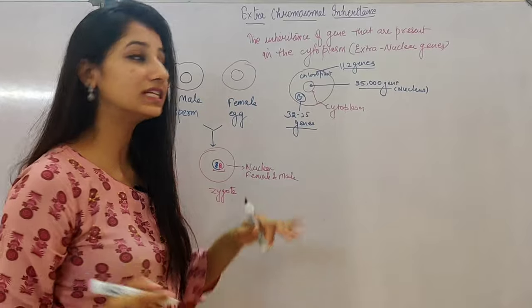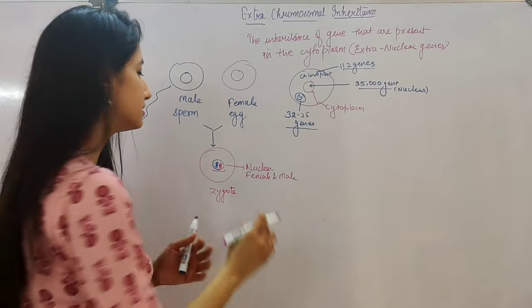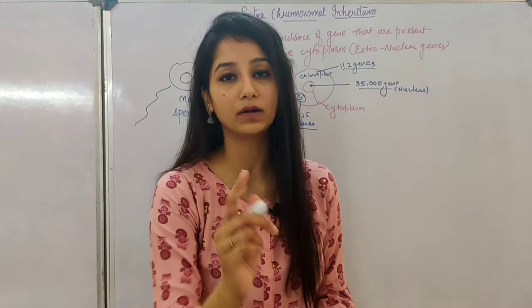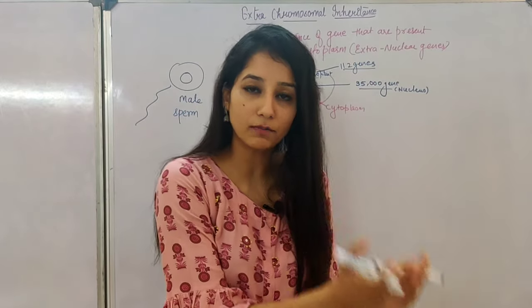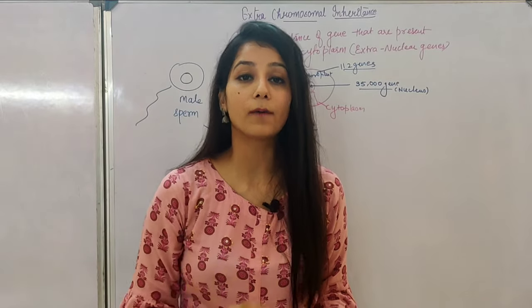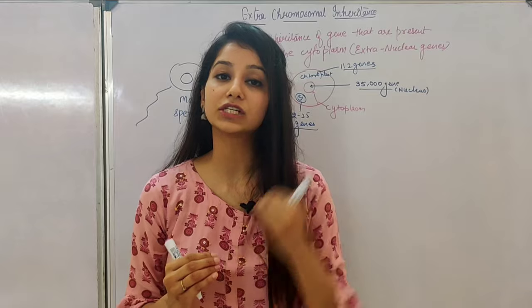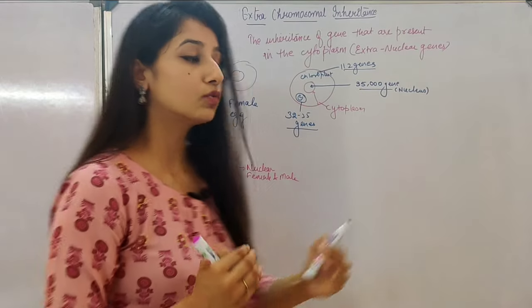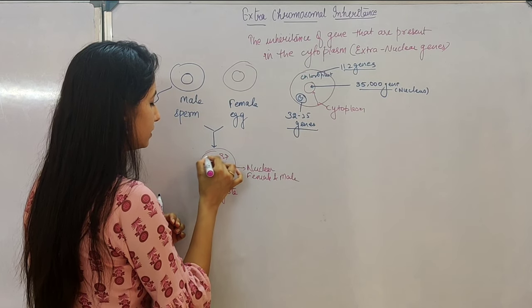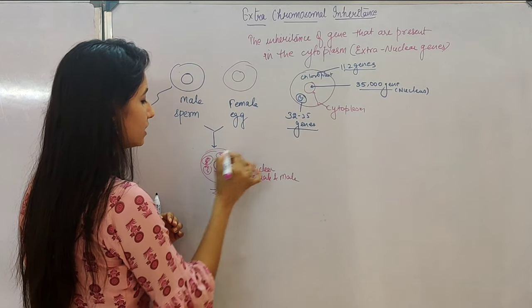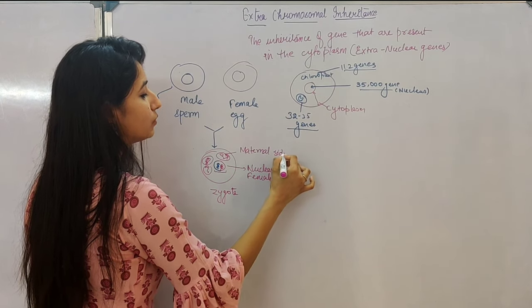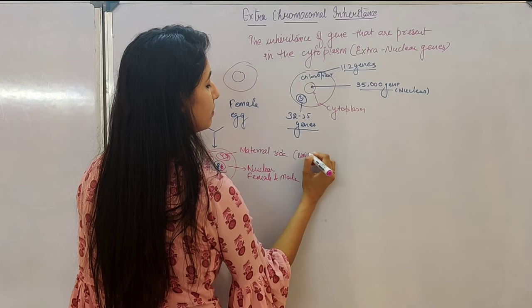But if we see cytoplasmic inheritance, then the genes are present from only one parent — either from the maternal side or from the paternal side. Generally it is from the maternal side, or we can say generally it is from the egg. So in this zygote, the genes are generally present in the organelles from the maternal side. That's why cytoplasmic inheritance is known as uniparental.